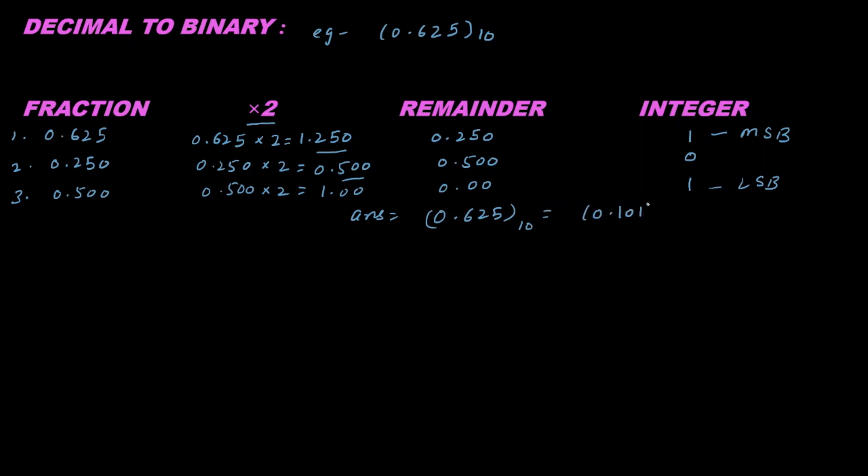So I can write my answer as 0.625 to the base 10 equals 0.101 to the base 2. This is the conversion.